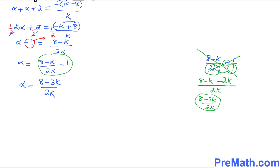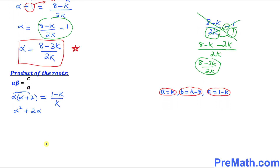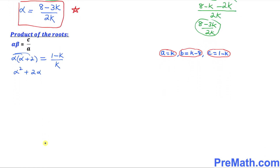In the next step, the product of roots is given by alpha × beta = c/a. We know beta = alpha + 2, so alpha × (alpha + 2) = c/a. In our case, c = 1 − K and a = K, so this equals (1 − K)/K. Distributing gives alpha² + 2α = (1 − K)/K.